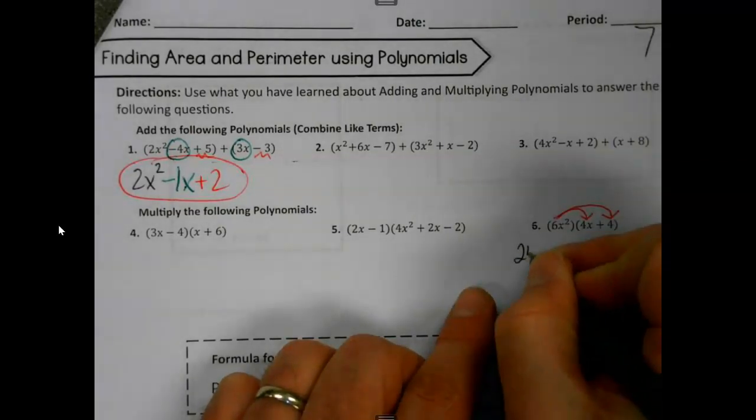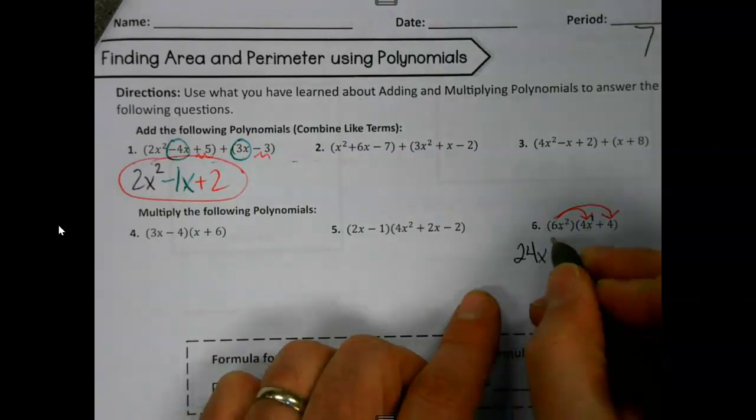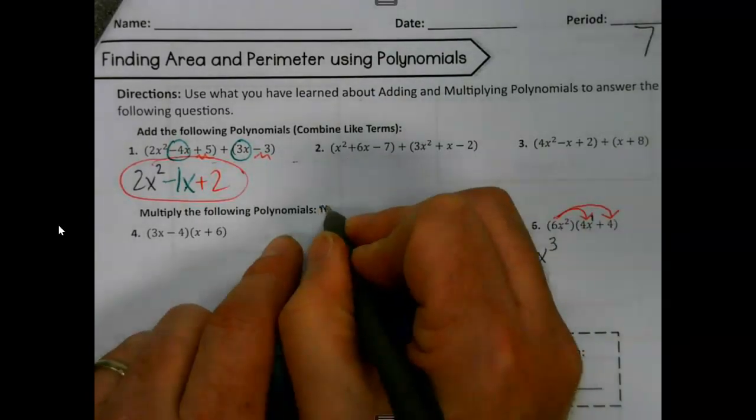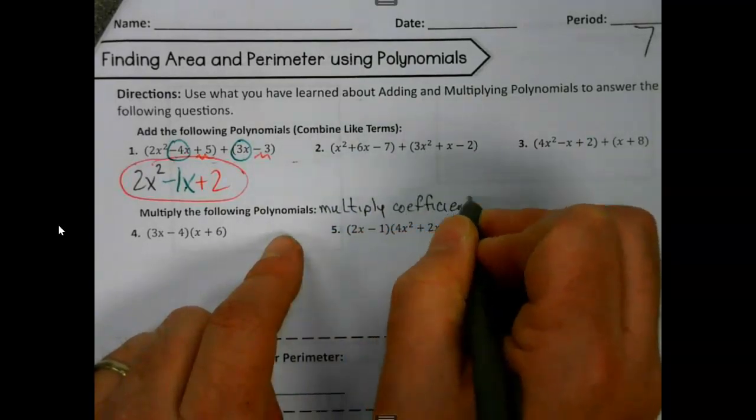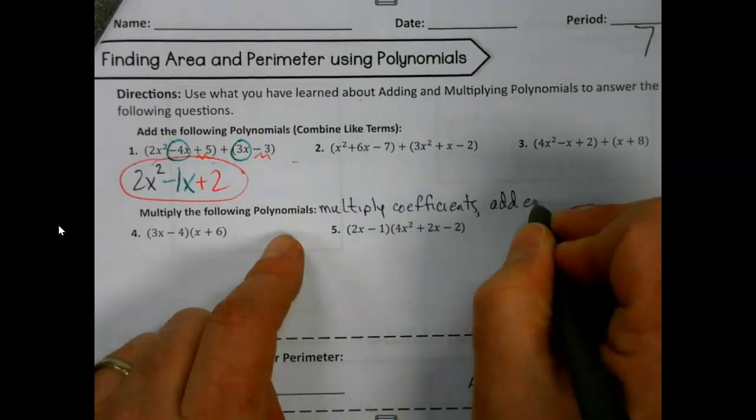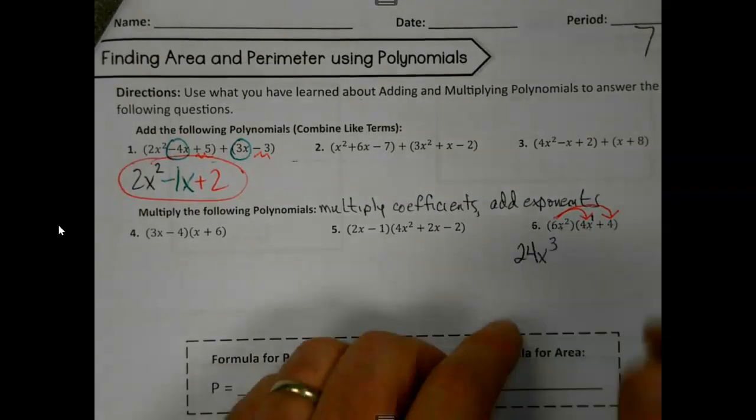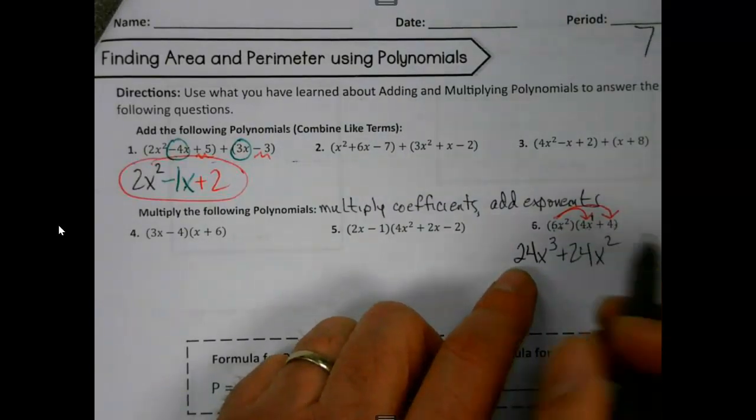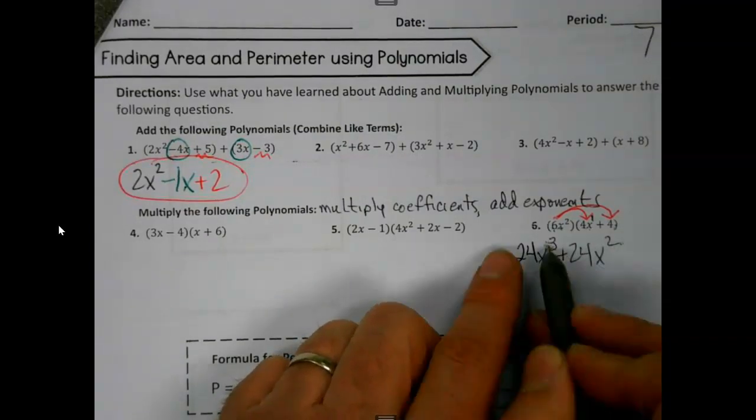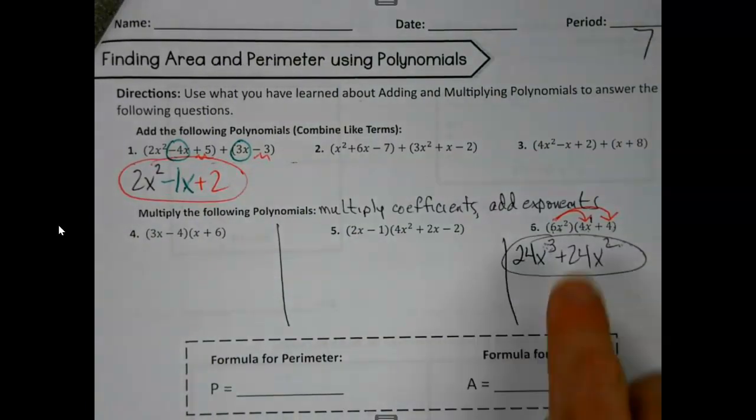So 6 times 4 is 24. And when we multiply, we add the exponents. 2 plus 1 is 3. So again, reminder. Multiply coefficients, add exponents because that's what we do when we're doing these. And the nice thing is you can pause me on this video anytime you want. Multiply my coefficients. There is no other x here. So it's just x squared. These are not the same. I cannot add these. They don't have to be 3 or both have to be 2. They're not. I'm done.